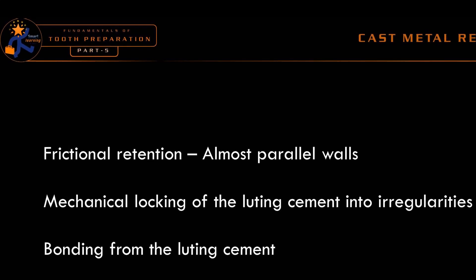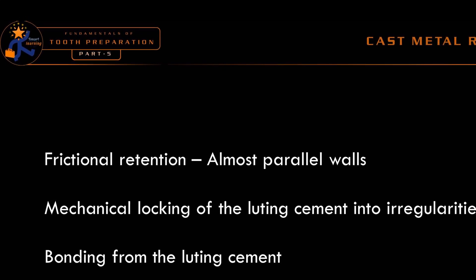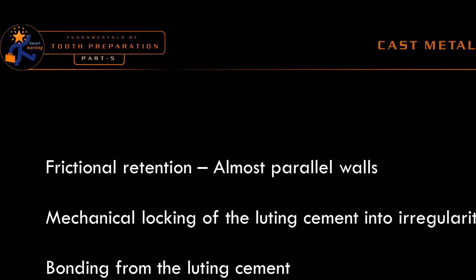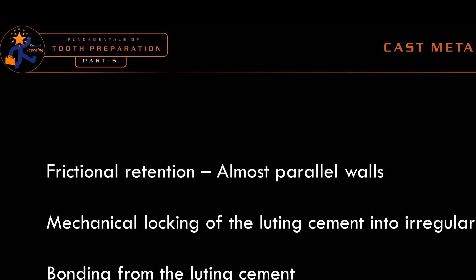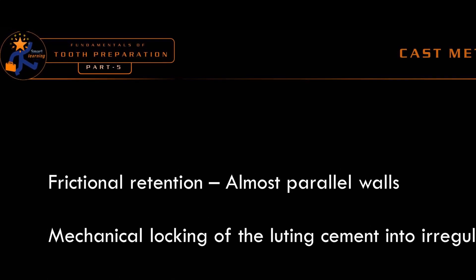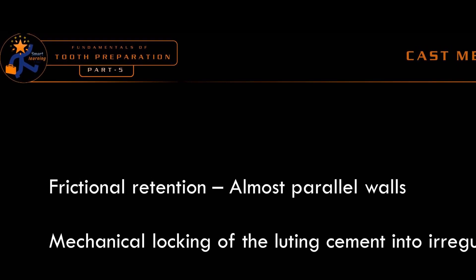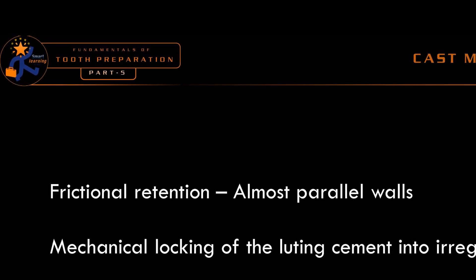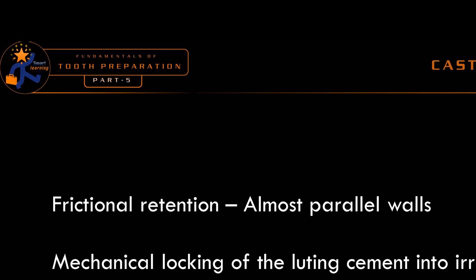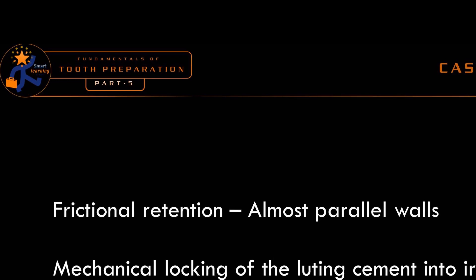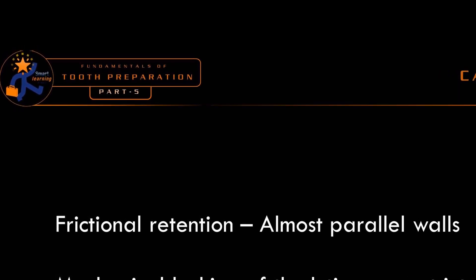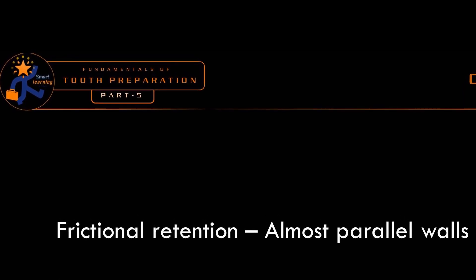Also, if a resin cement is used for luting, it can bond micro-mechanically to the tooth surface and also to the restoration. Thus, multiple forms of retention can be employed for a cast restoration. It cannot always be said that one type of retention is adequate for a specific restorative material — sometimes more than one type of retention technique is employed.